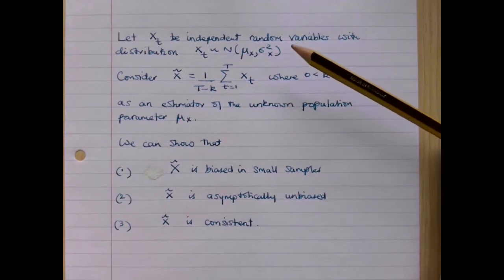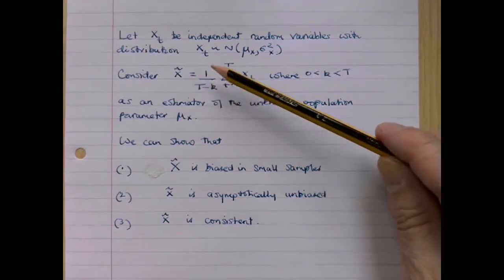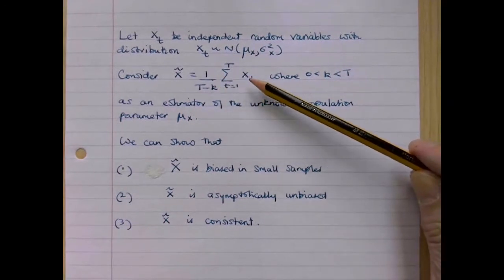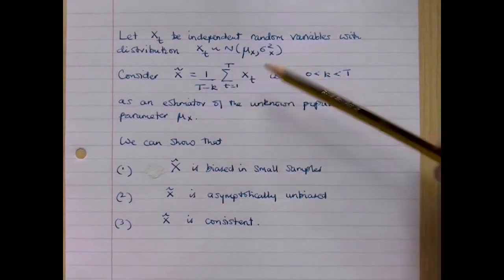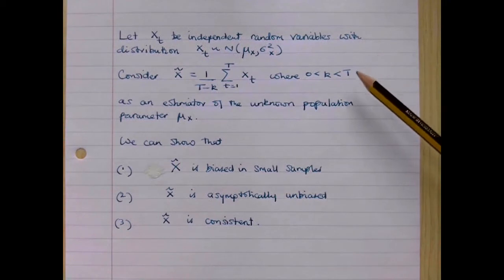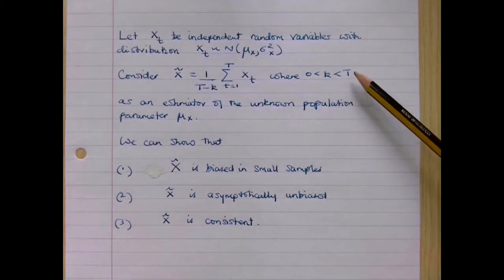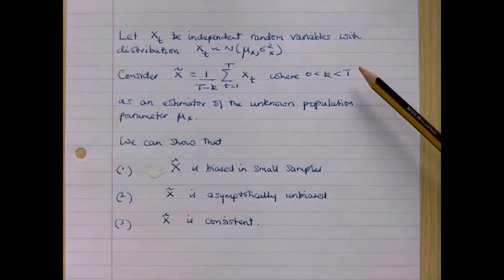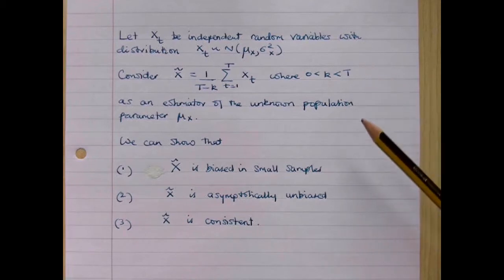Consider as an estimator x tilde, where x tilde is 1 over T minus k multiplied by the sum from t equals 1 to capital T of xt, where k is some positive number that's less than T. Now this isn't a particularly sensible estimator to use, but it does illustrate the properties that we want to show.